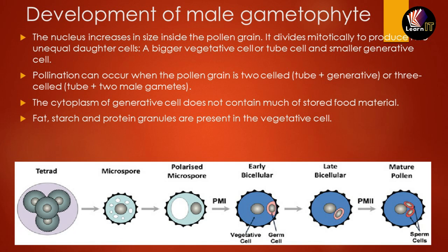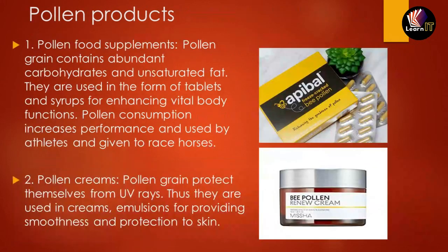The generative cell does not contain much stored food. As pollen grains mature, they do not retain stored food material. Fats, starch, and polar protein granules are present in the vegetative cell. The generative phase has no stored food material, but the vegetative phase contains fats, starch, and protein. The mature pollen consists of a larger vegetative cell and a smaller germ cell, which divides again into two sperm cells.